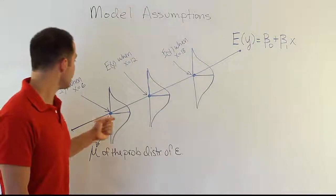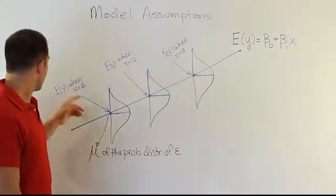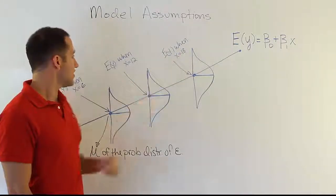Now from there what you see is you see little points on the number line. These are arbitrarily chosen at x equals 6, x equals 12, x equals 18.